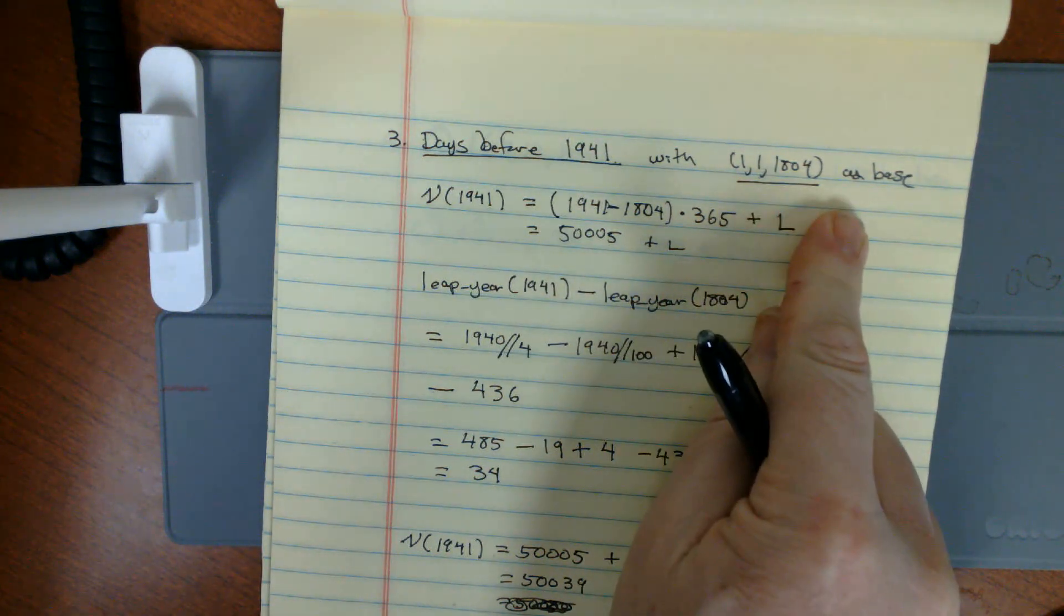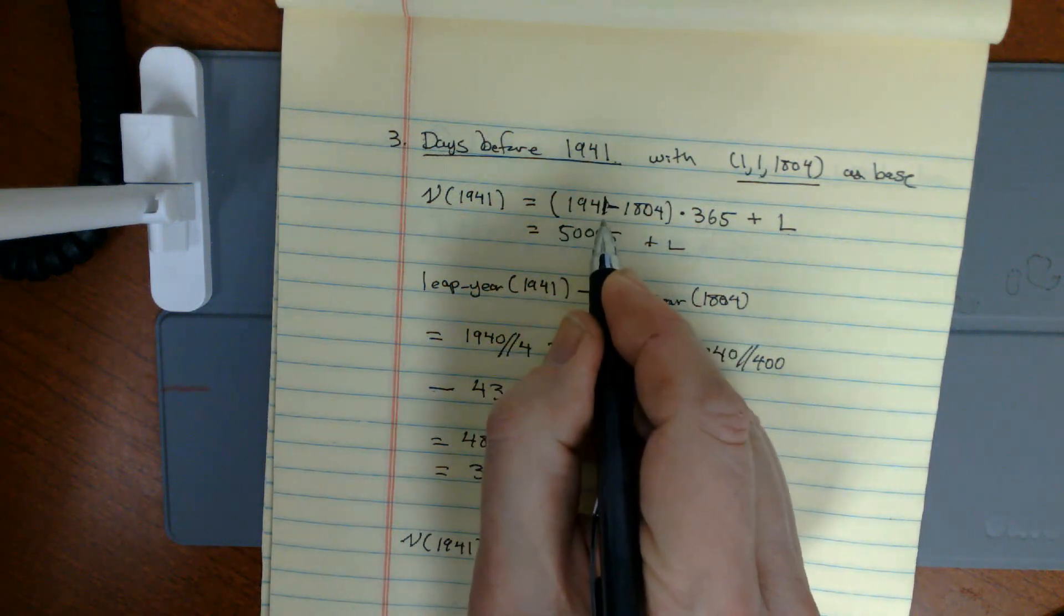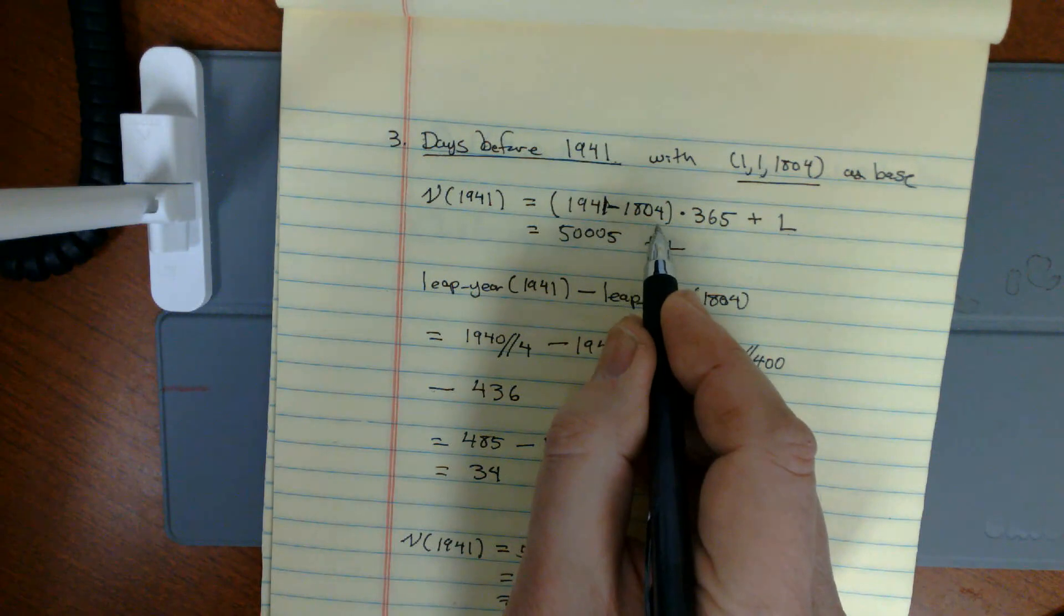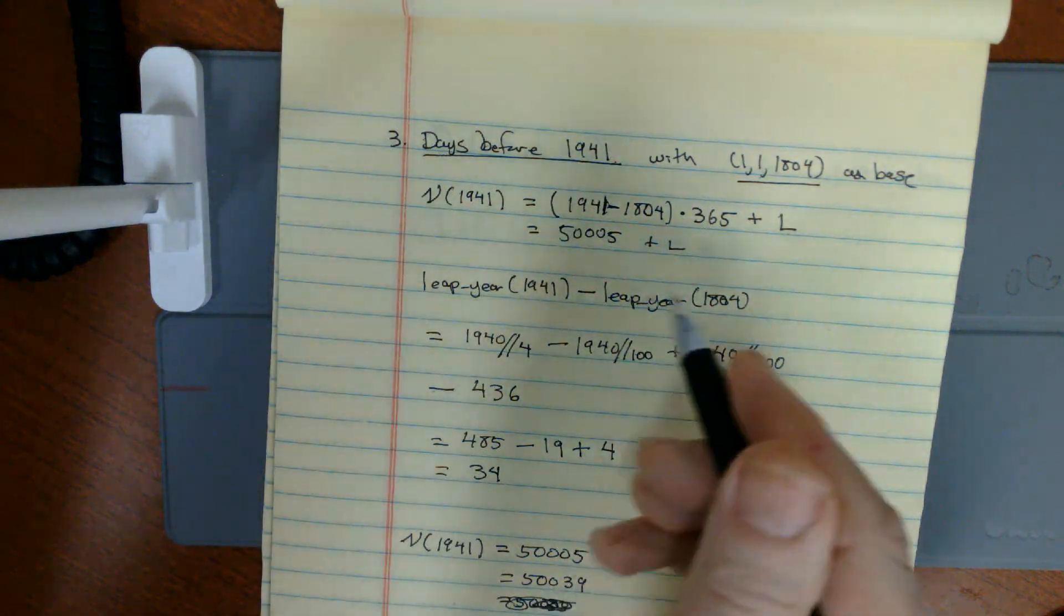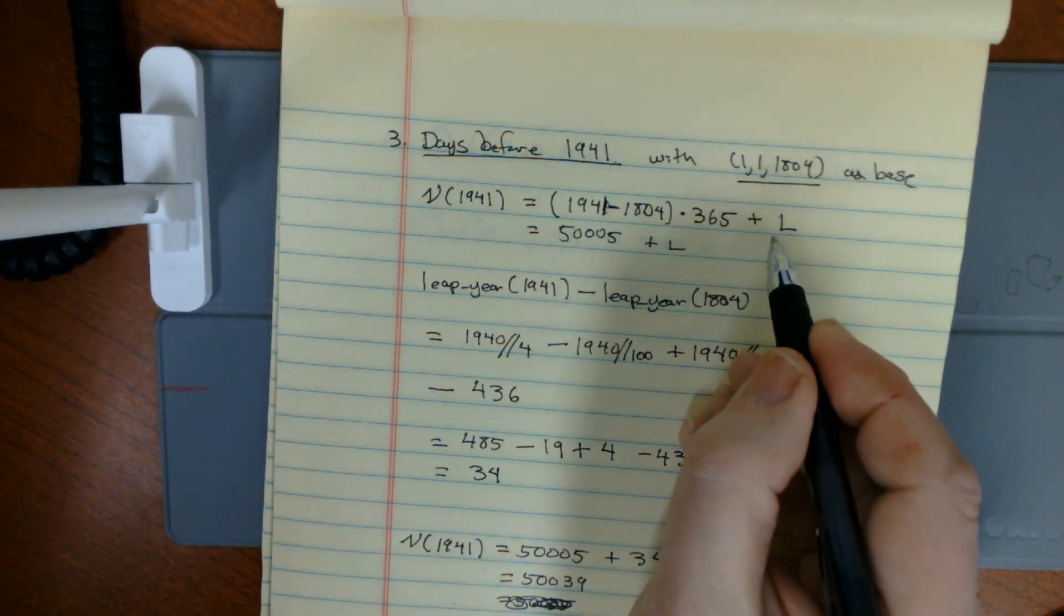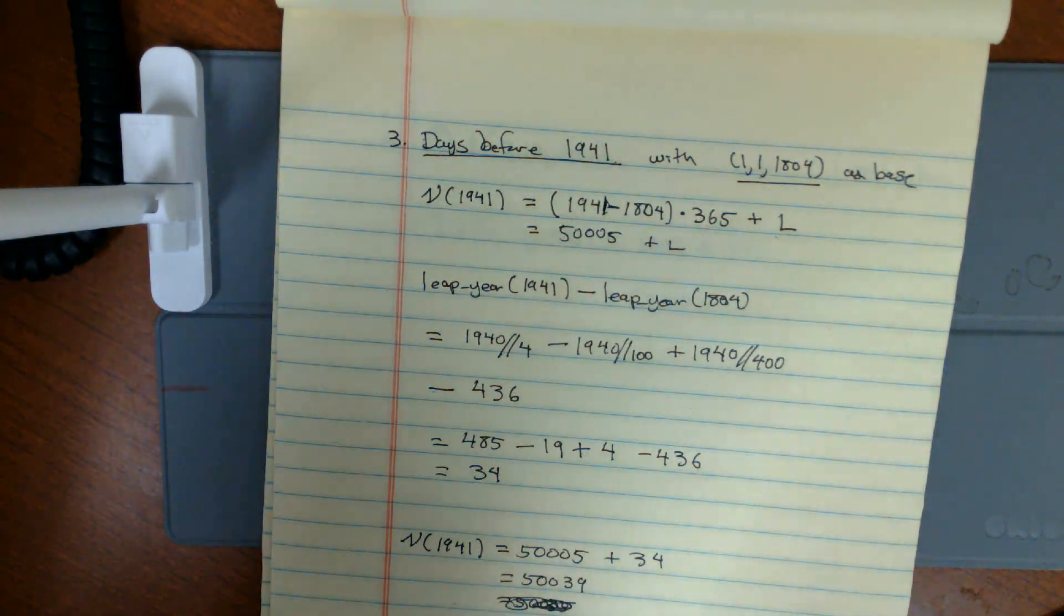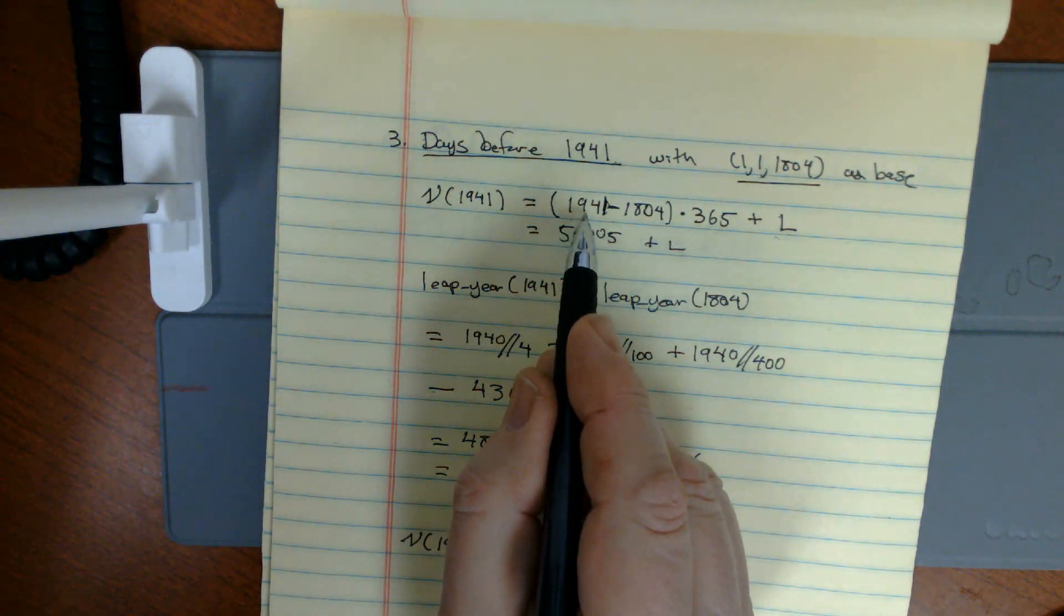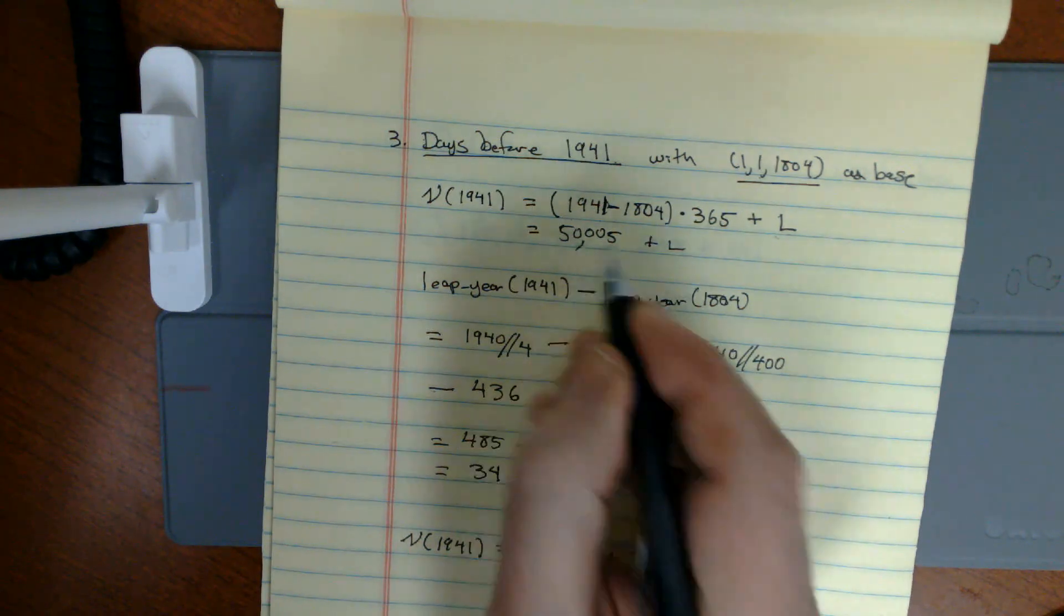How many days occur 1804, 1805, 1806, all the way up through the end of 1940 before 1941? It's going to be 1941 minus 1804 times 365, because every year contains 365. It's just that the leap years contain an extra day. This L right here that I add on at the end is the number of leap days, which is equal to the number of leap years. My 1941 minus 1804 times 365 is equal to 50,005.